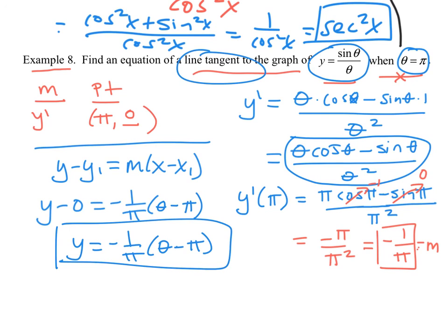That's how you write the equation of a tangent line using a function that has a quotient rule. You can do the same thing with a product rule, etc. — plug in the value, and remember that slope comes from the derivative evaluated at that value.